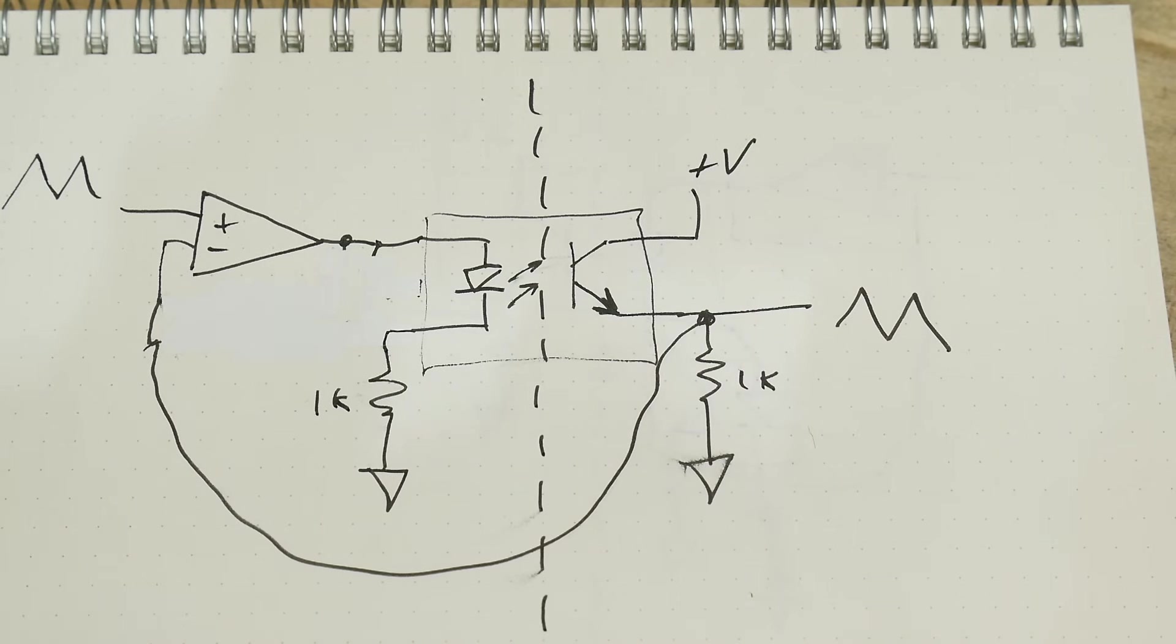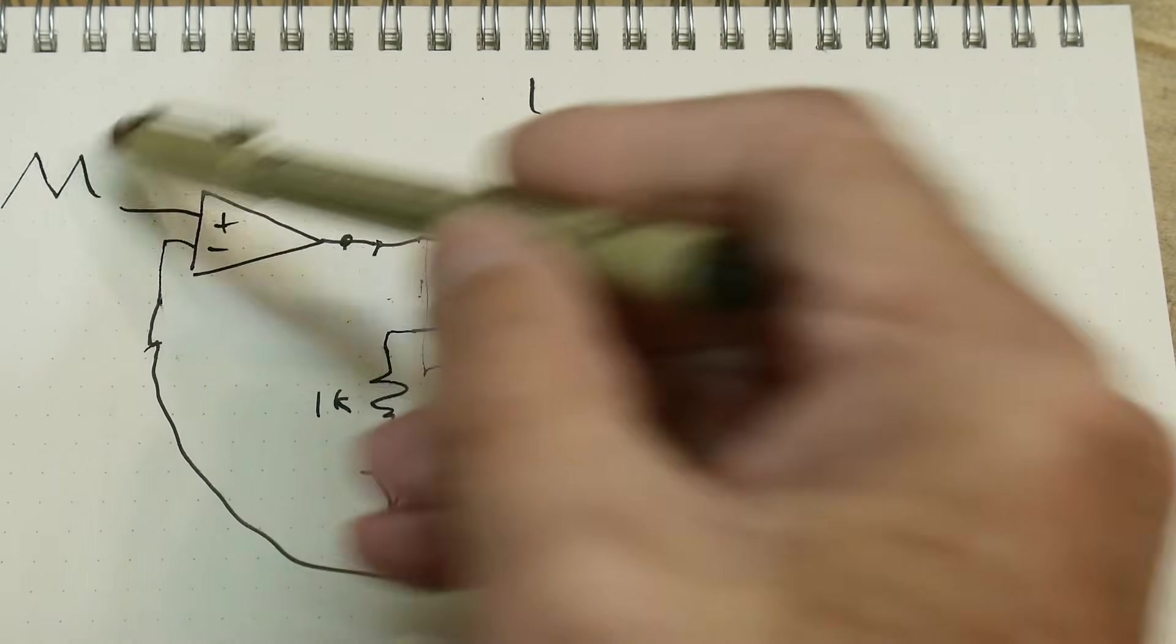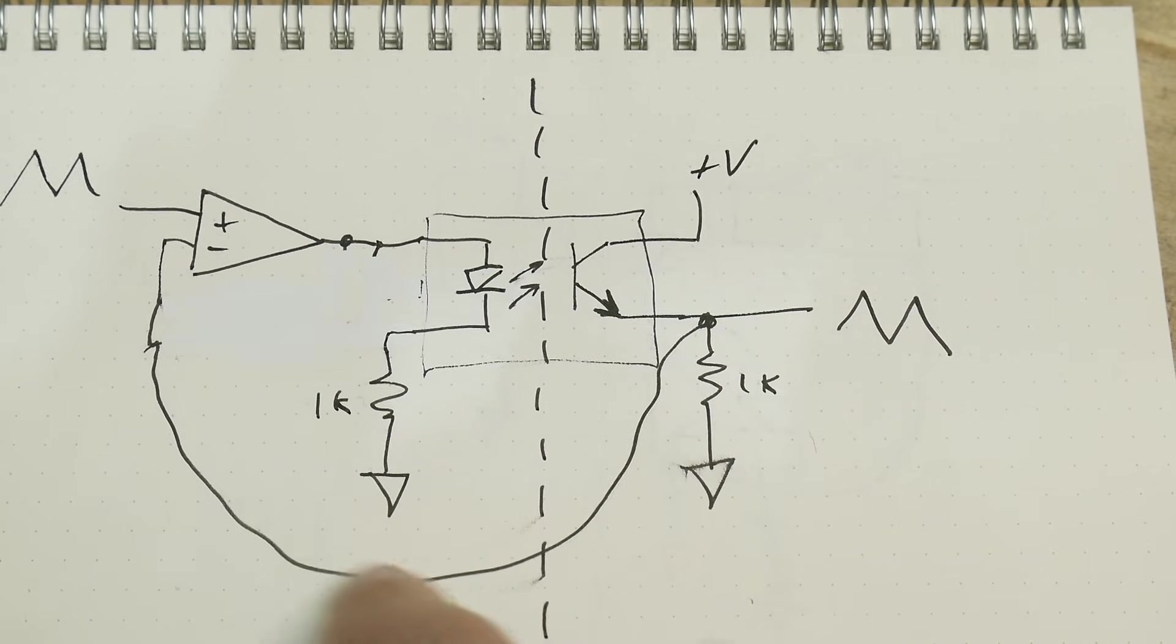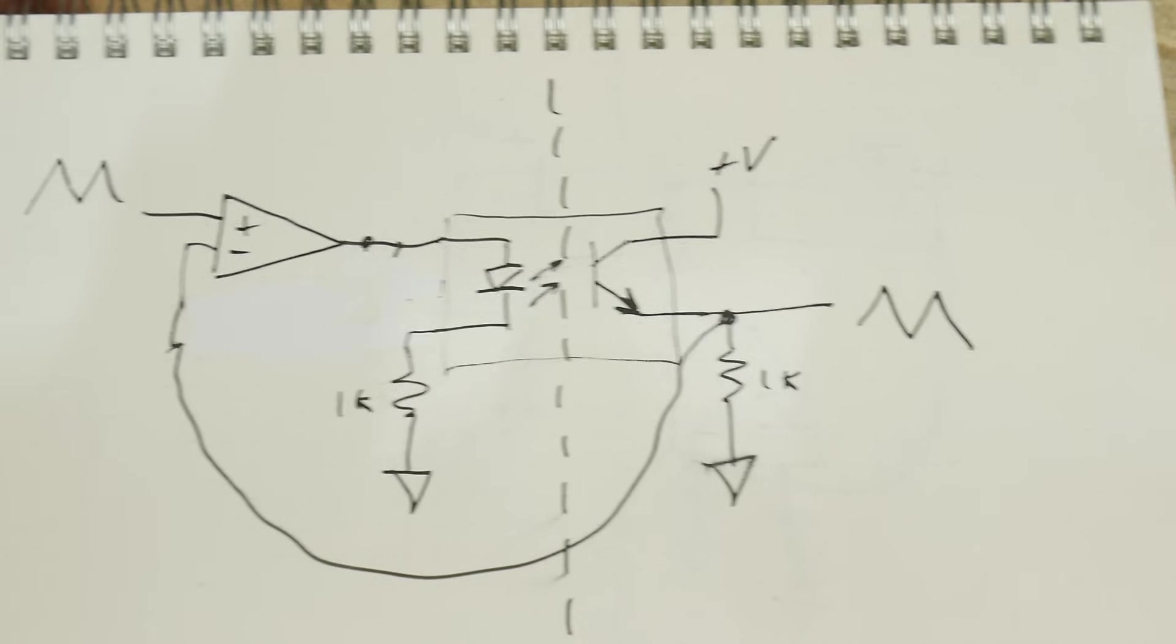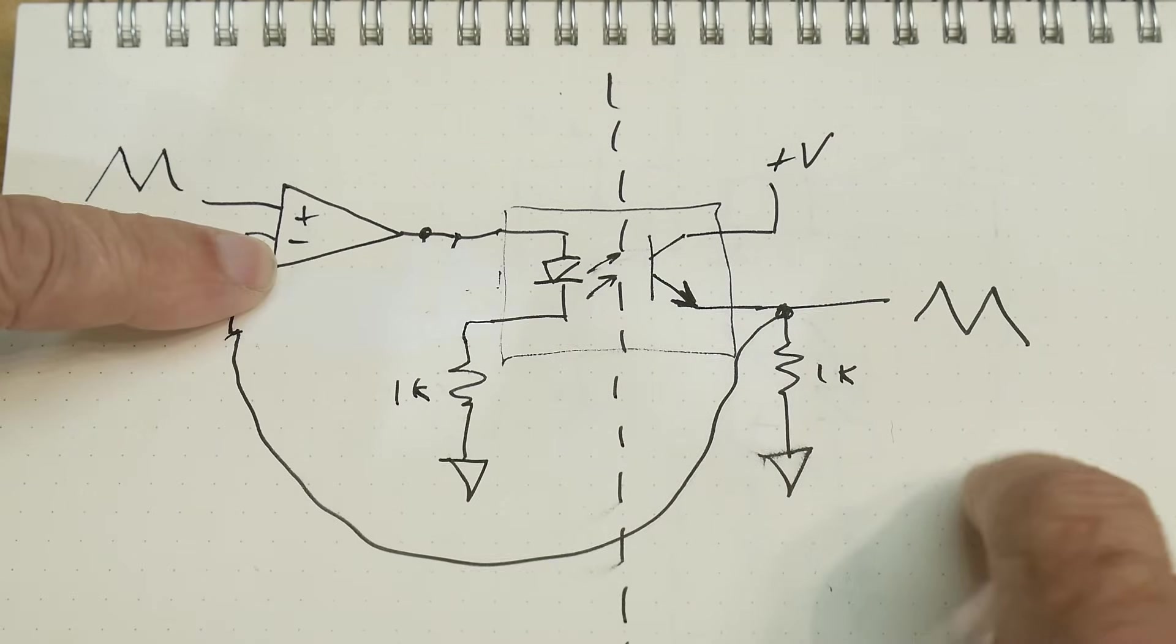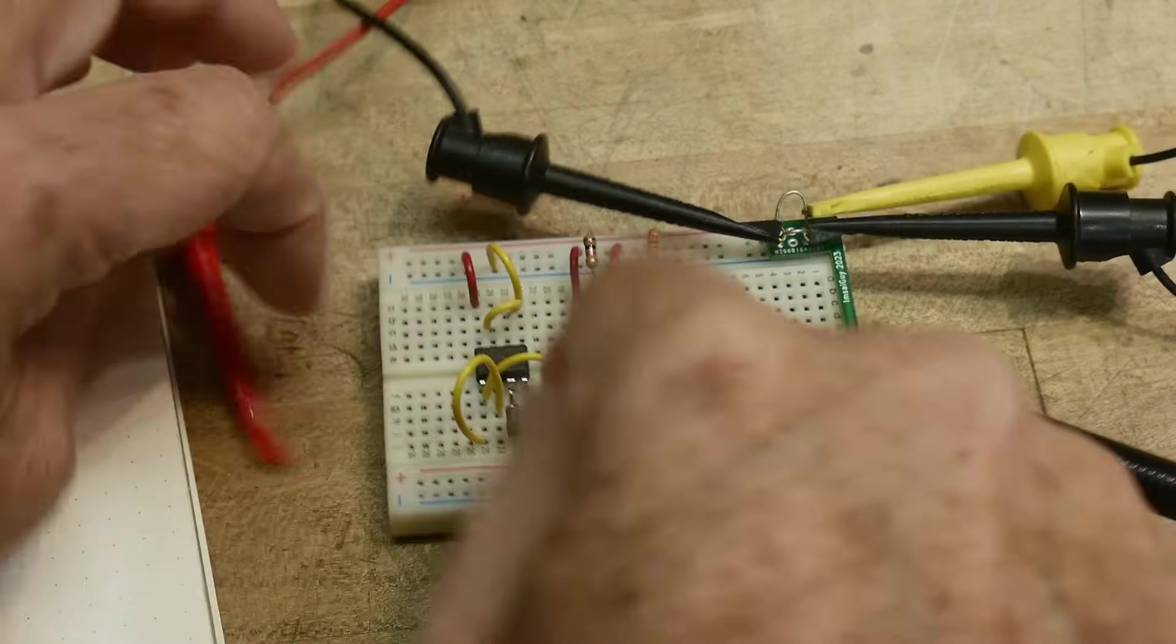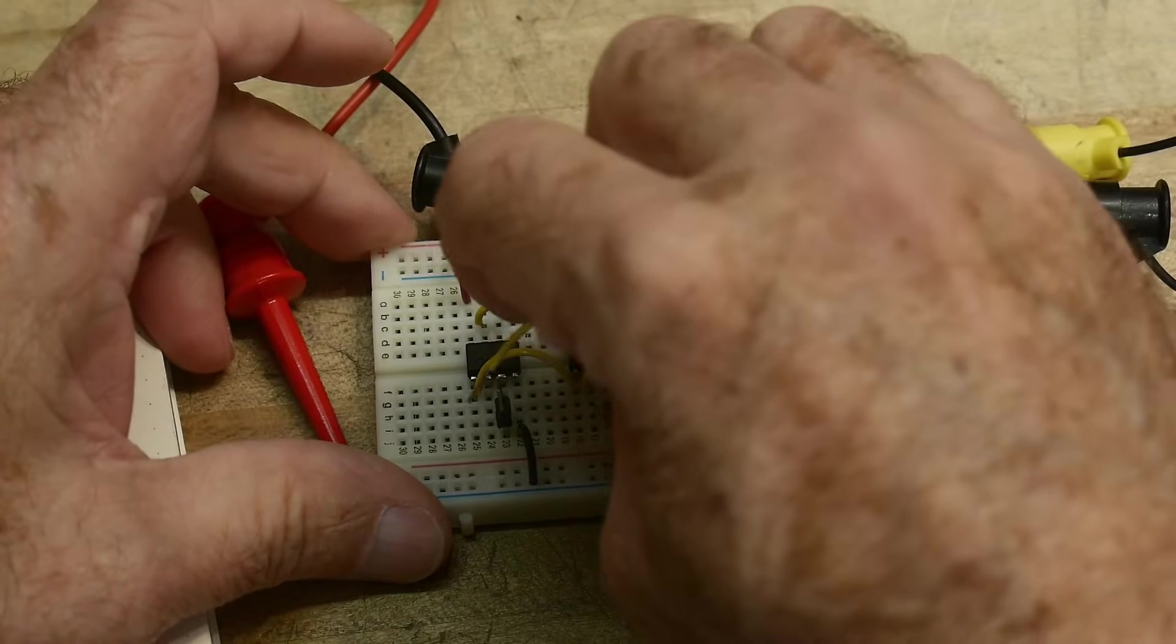This is what we're going to do. We're going to put a feedback path all the way to the output. So this is our input, this is our output. We take that voltage that's on the output and feed it all the way back to the op amp. The op amp wants to have the plus and minus always the same. If this is wiggling up and down, it's going to make the minus wiggle up and down the exact same amount. This feedback fixes everything.